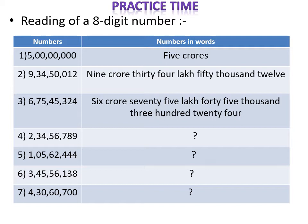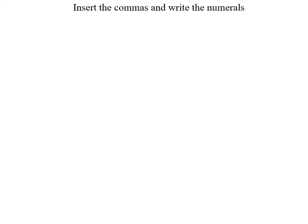The second example: nine crore thirty-four lakh fifty thousand and twelve. Third: six crore seventy-five lakh forty-five thousand three hundred and twenty-four. The fourth and fifth examples are left for you to try — I'm sure you can do it.